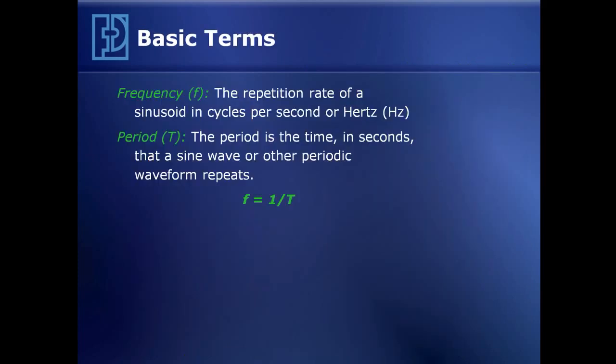I'd like to introduce a couple of basic terms. Frequency is the repetition rate of a periodic or sinusoidal signal, represented in cycles per second or in units of hertz. Period is the time for a sine wave or periodic waveform to repeat itself. The relationship between frequency and period is an inverse one, where frequency equals one over the period.